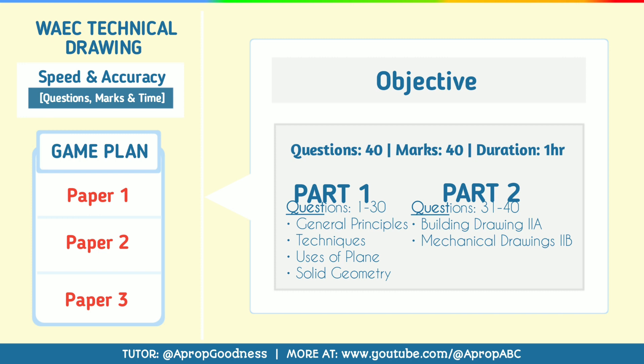Paper 1 has two parts: Part 1 and Part 2. Part 1 covers questions 1 to 30, carrying 30 marks — these are general principles, techniques, and uses of plane and solid geometry. Part 2 covers questions 31 to 40, which is 10 questions worth 10 marks. There are two sections: you can do building drawing or mechanical drawing.